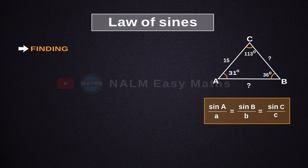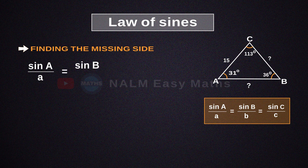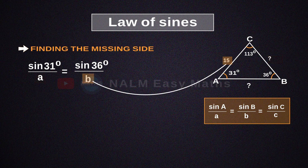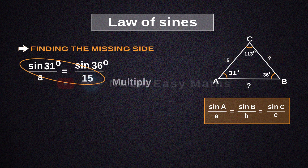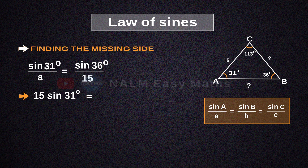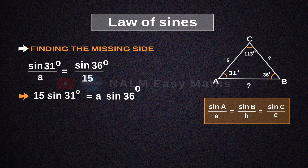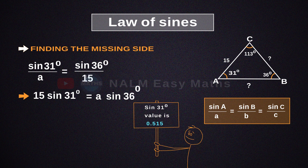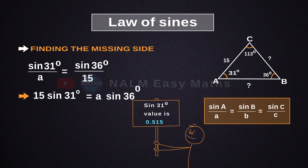Next, find the missing side as per the law. Let's take sine A over A equals sine B over B. We substitute 31 degrees for sine A, 36 degrees for sine B, and 15 for side B. Cross-multiplying gives us 15 sine 31 degrees equals A times sine 36 degrees.